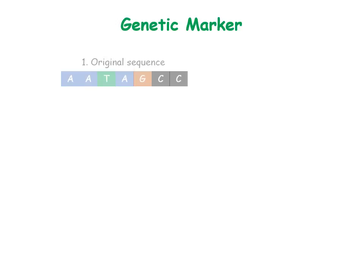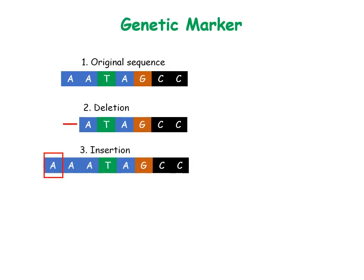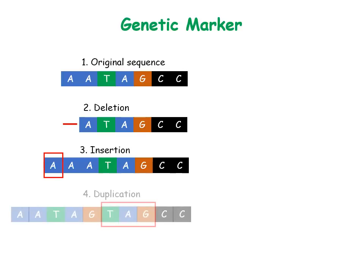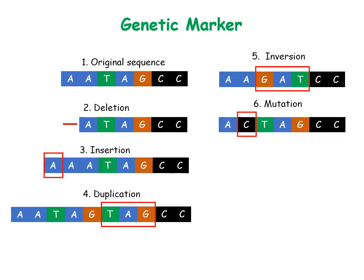Consider a small region of the whole DNA. The variation may be deletion of a nucleotide like A in this case, insertion of a nucleotide A, duplication of a region such as TAG, inversion of TAG to GAT, or mutation of a nucleotide like A to C.